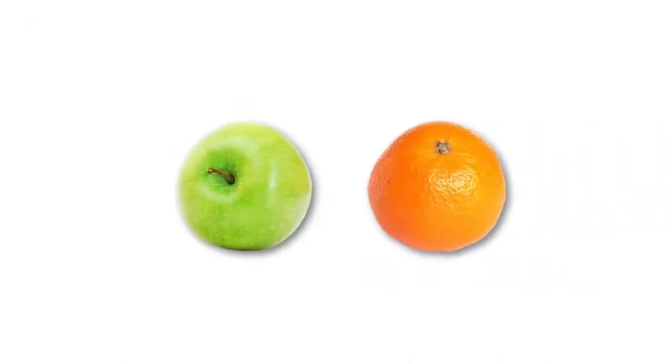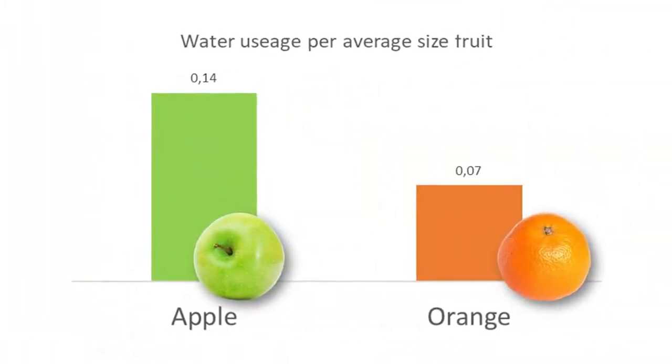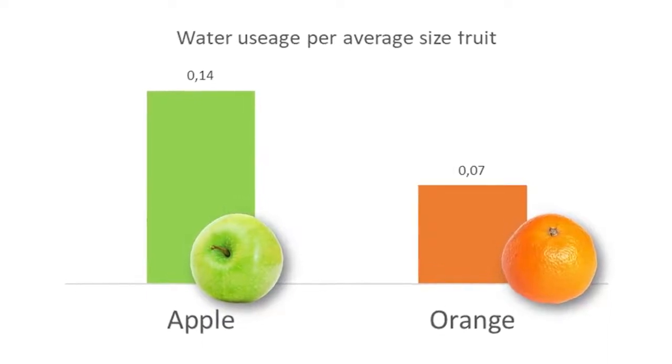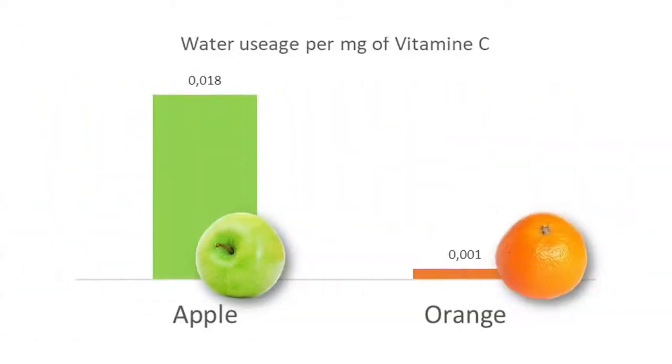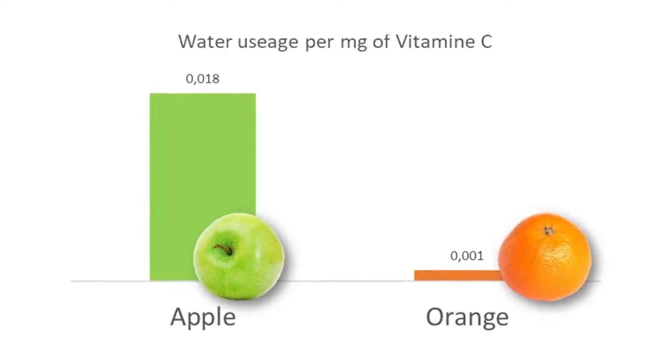To start an LCA, you first have to define the functional unit. The functional unit is a metric that allows you to compare apples with oranges. To compare the environmental impact of an apple to that of an orange, you could calculate the impact of both fruits based on a certain weight or volume. But you could also compare them on the amount of vitamin C they contain. Comparing both fruits on the functional unit of the average size of the fruit, the impact of an orange is twice as low as that of an apple. When we do the same thing but compare it on the functional unit of 1 mg of vitamin C, the impact of an orange is even 20 times lower than that of an apple.